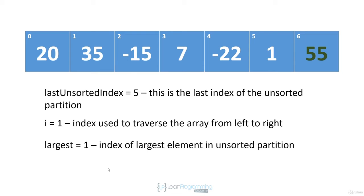We compare 35 against 20 — 35 is greater, so we set 'largest' to one. We increment i to two and compare -15 against 35 — -15 is less, so we increment i to three. Seven is less than 35, so we increment i to four. -22 is less than 35, so we increment i to five. One is less than 35, and at this point i equals the last unsorted index so we've completed our second traversal. We swap the largest element at position one with the last element in the unsorted partition at index five — swapping 35 and one — so 35 and 55 are now in their correct sorted positions.